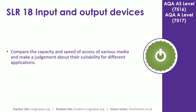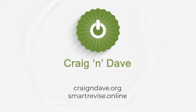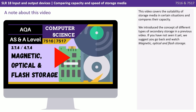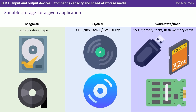In this video we compare the capacity and speeds of access of media and make a judgement about their suitability for different situations and applications. This video covers the suitability of storage media in certain situations and compares their capacity. We introduced the concept of different types of secondary storage in the previous video — if you've not seen it yet, we suggest you go back and watch that first. So let's summarise the three main types of secondary storage you need to be aware of for the exam.